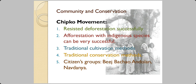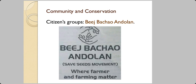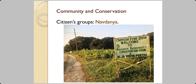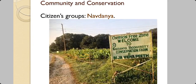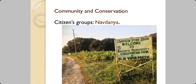Community conservation activities have produced good results. The Chipko Movement resisted deforestation successfully and carried out afforestation with indigenous species using traditional cultivation and conservation methods. They also established citizen groups such as Beej Bachao Andolan, which protests against genetically modified seeds and the harm they can cause to other seeds, and Navdanya, which promotes chemical-free farming using traditional manure and seeds.